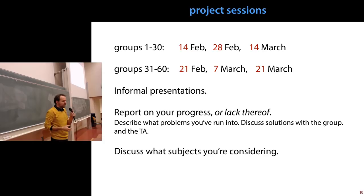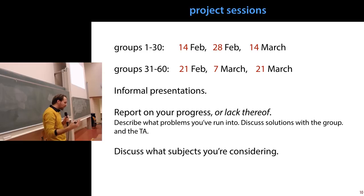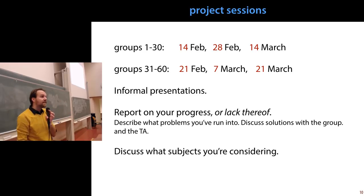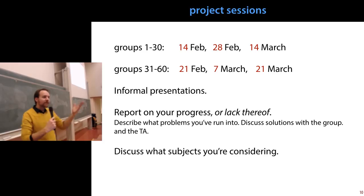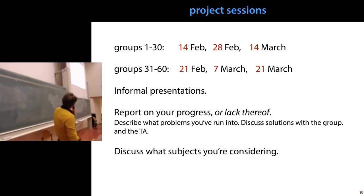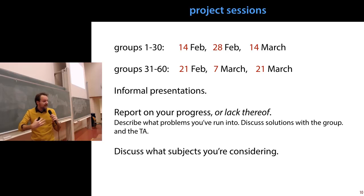One person from your group presents — it's a very informal presentation. You just show what you've been doing. If you haven't been doing anything, you explain why. If something didn't work, you explain what the problem was. Maybe people in the group can help you. It's supposed to be collaborative — let's help each other out and see what we're all doing. These are the dates for different groups. Discuss what subjects you're considering and let the TA help you out.